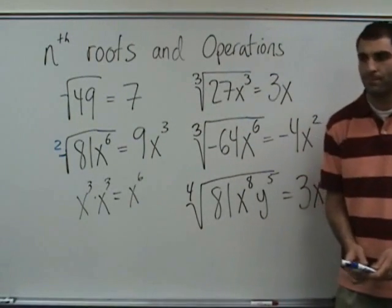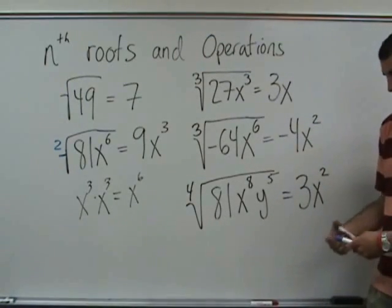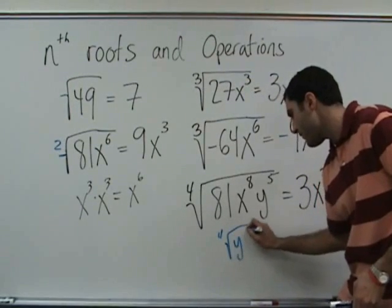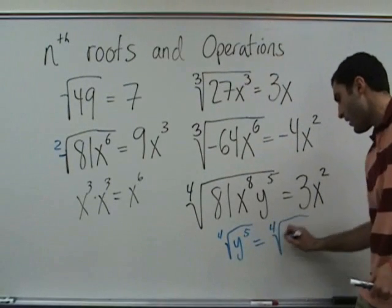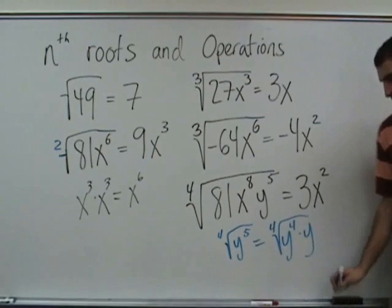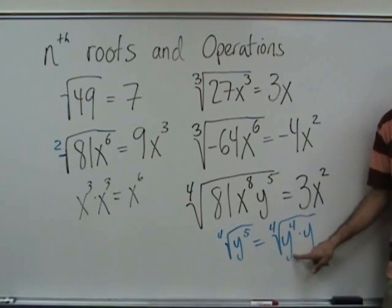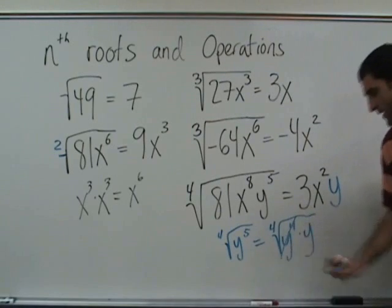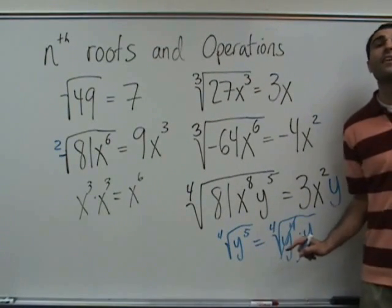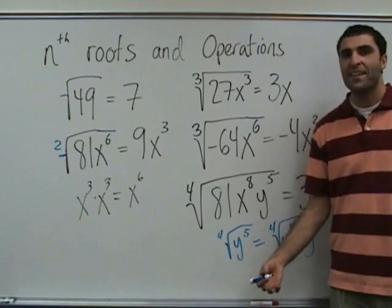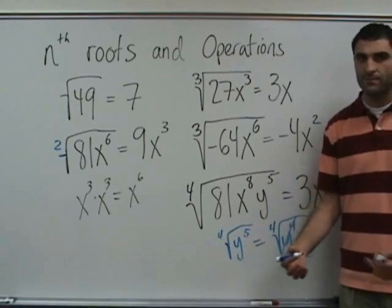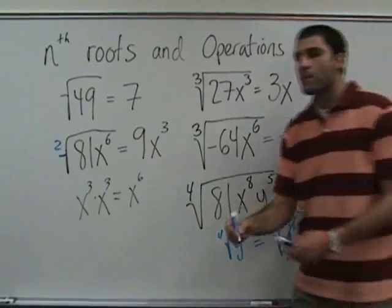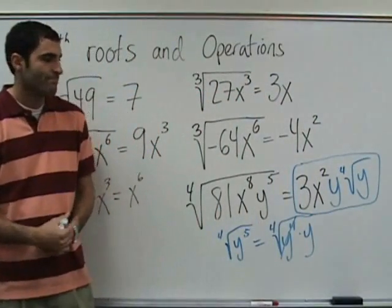Now, y to the 5. You pull out one y. Could we agree that the fourth root of y to the 5 is the same as the fourth root of y to the 4 times y? The fourth root of y to the 4 is just y. This y to the 4 is taken care of. The fourth root of y — we can't do anything — so we write the fourth root of y. You simplify what you can and leave what you can't.